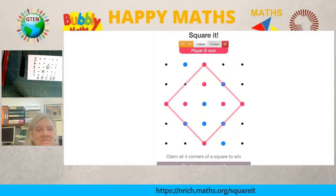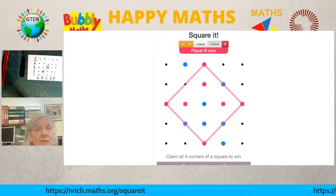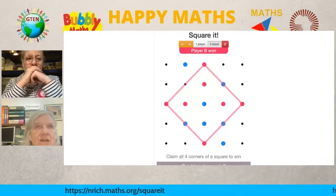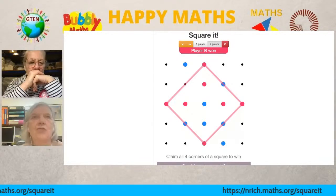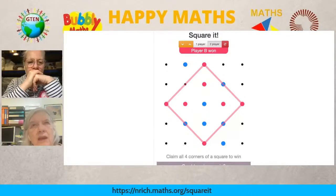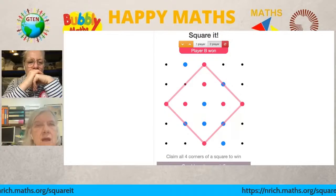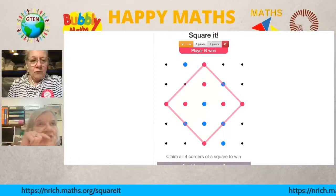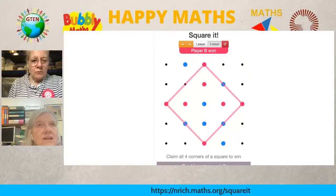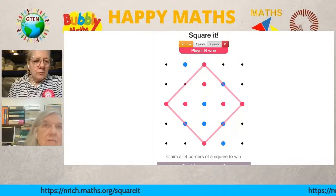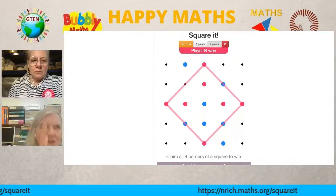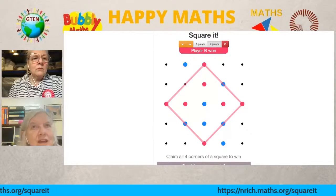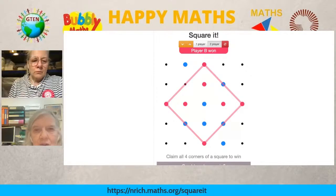You can see from the game that the red lines — the edges of the tilted square — have gradient one, meaning for every step across you go up one. The other edges have gradient minus one, going across one in the negative direction to go up one. Those two lines with gradients one and minus one are at right angles to each other. Other tilted squares can have other gradients.